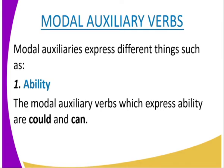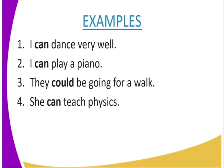We now look at the modal auxiliary verbs, which express different things such as ability. The modal auxiliary verbs that express ability use the words 'could' and 'can.' Examples: 'I can dance very well,' 'I can play a piano,' 'They could be going for a walk,' 'She can teach physics.'